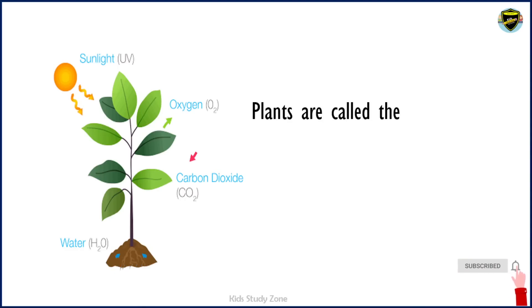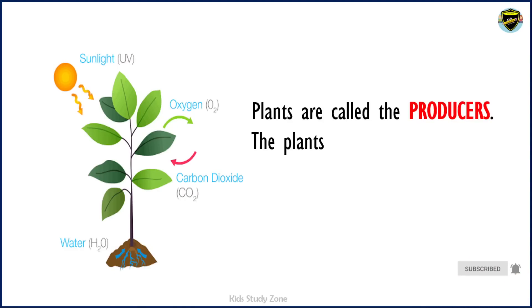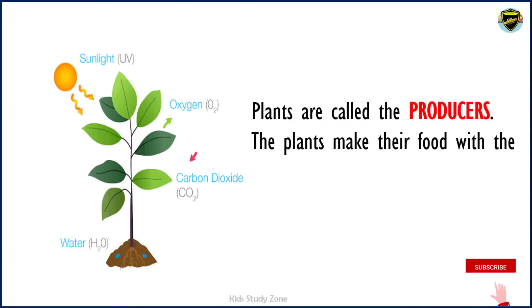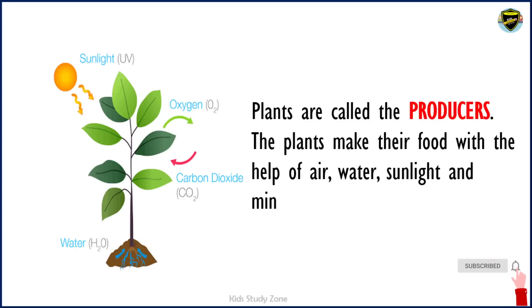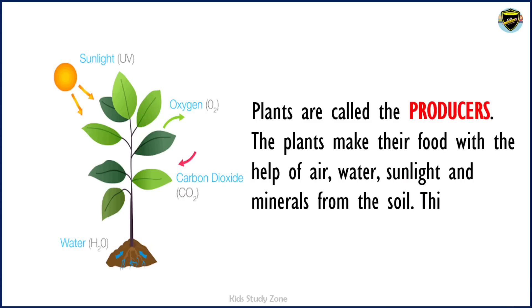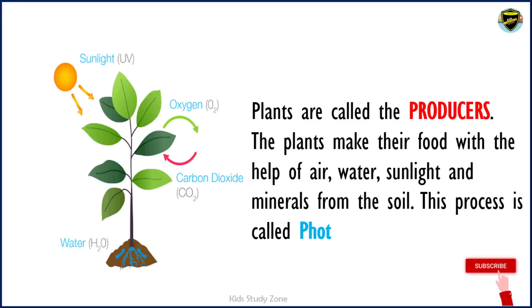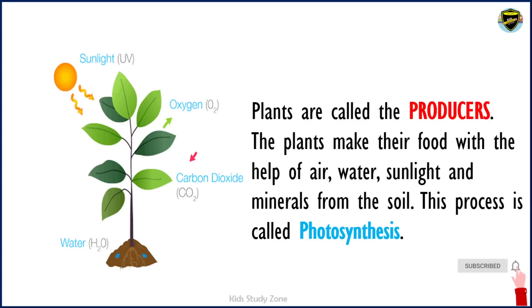Plants are called producers. The plants make their food with the help of air, water, sunlight, and minerals from the soil. This process is called photosynthesis.